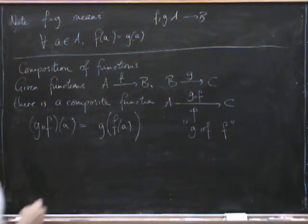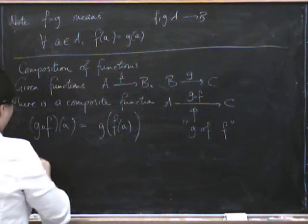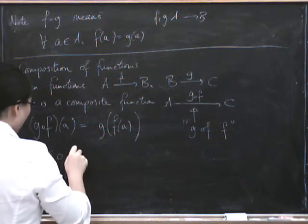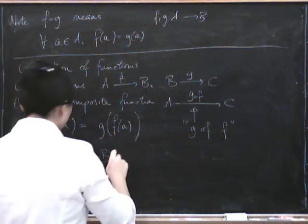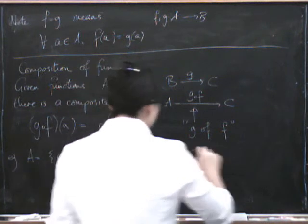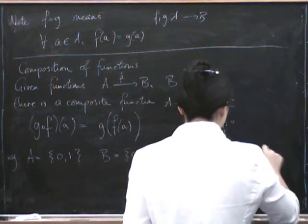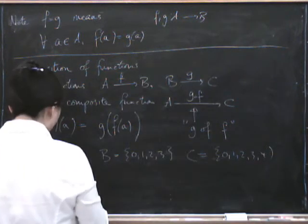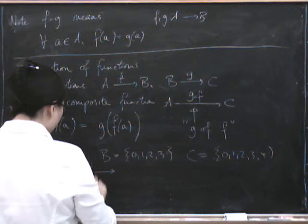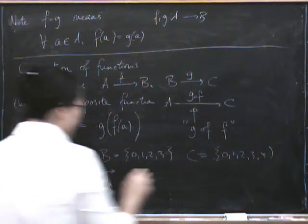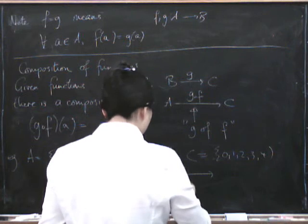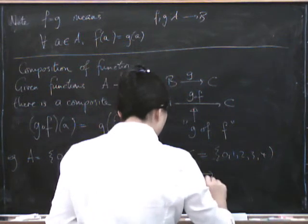So for example if we took A to be 0, 1 and we took B to be 0, 1, 2, 3 and we took C to be 0, 1, 2, 3, 4 then we can have a function F which would go like this from A to B defined by F of A equals 2A and then we could define a function G from B to C and we could define this by G of B equals B plus 1.